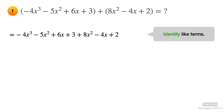Identify like terms. Terms with x squared are colored red. Terms with x are colored yellow. And the constants are colored green.